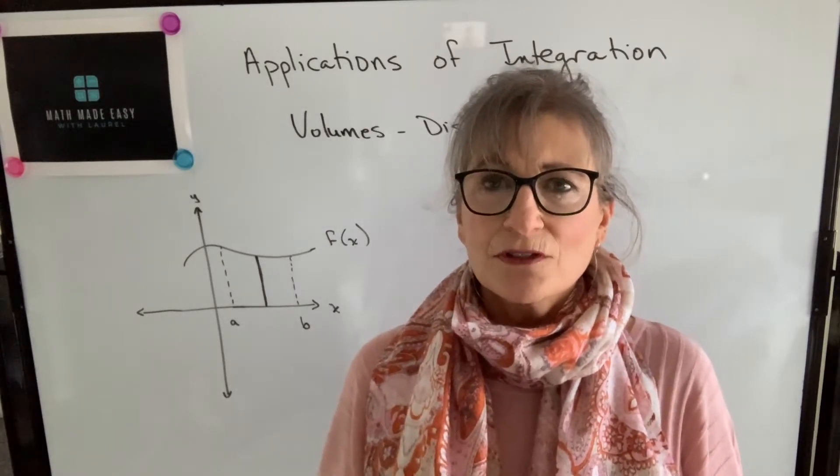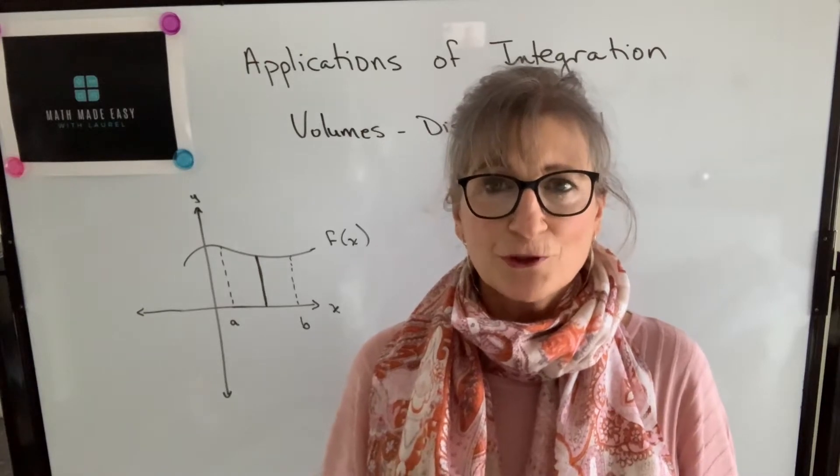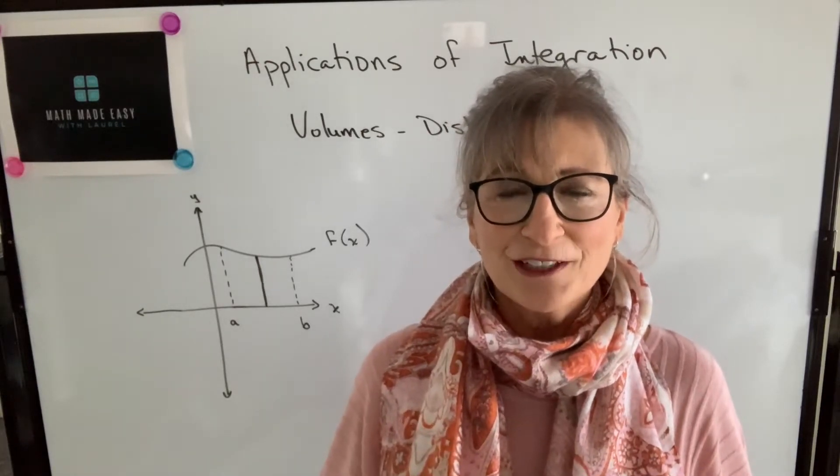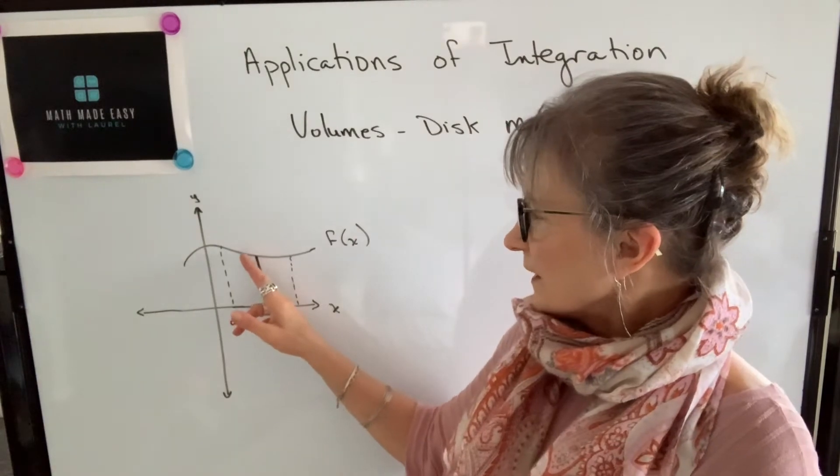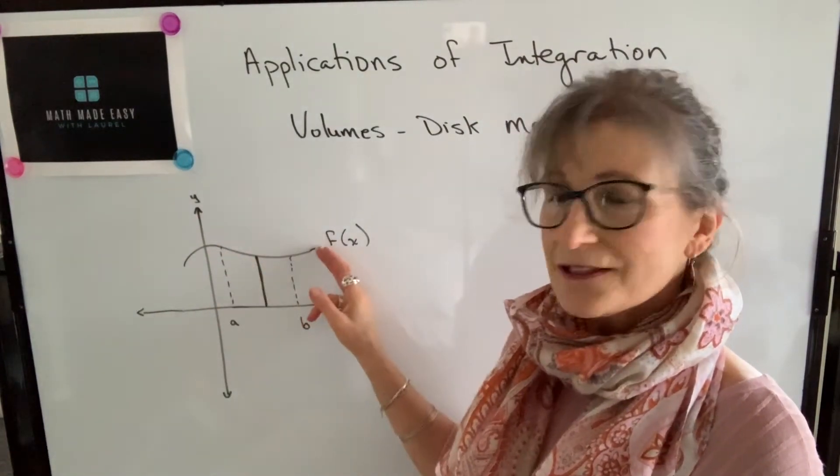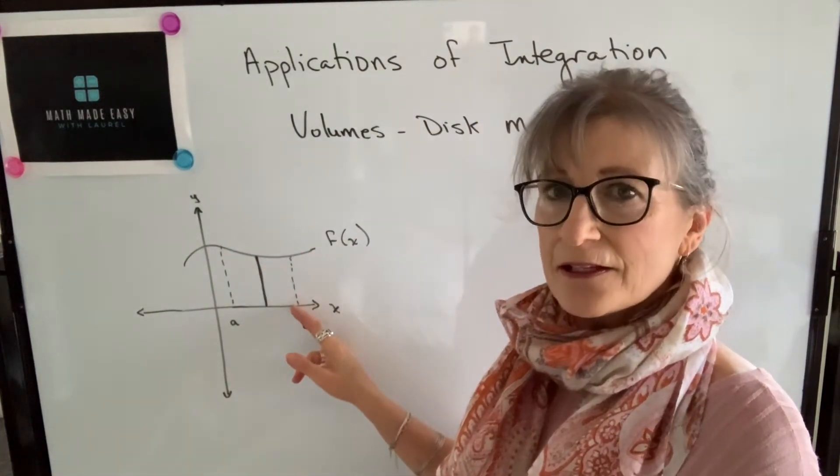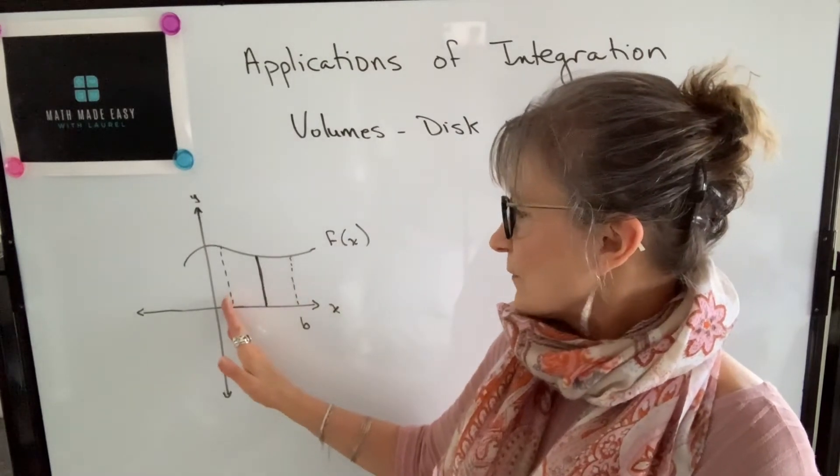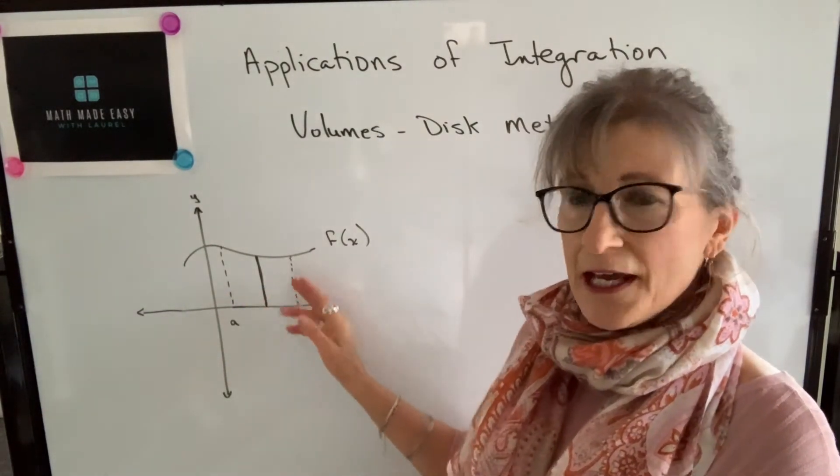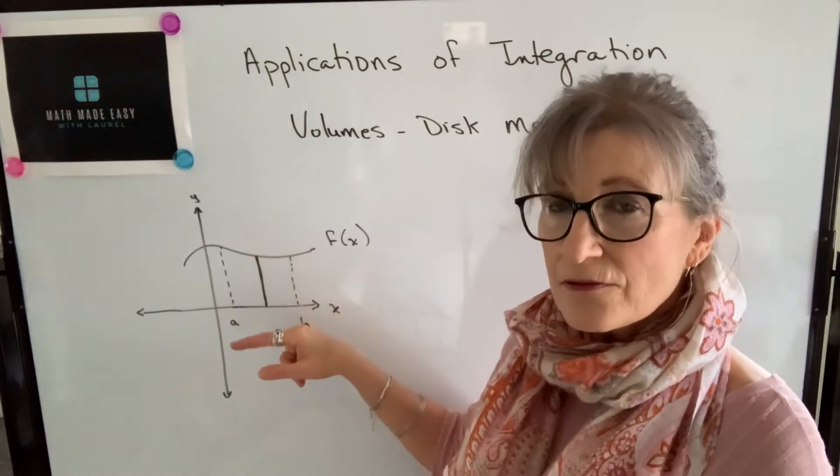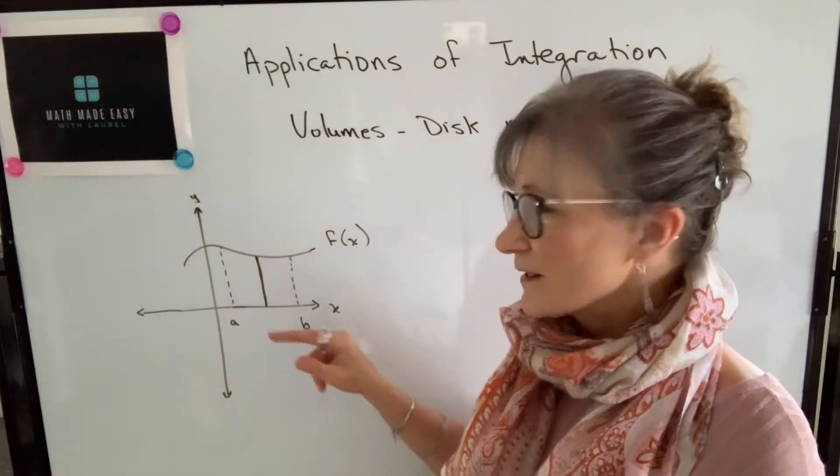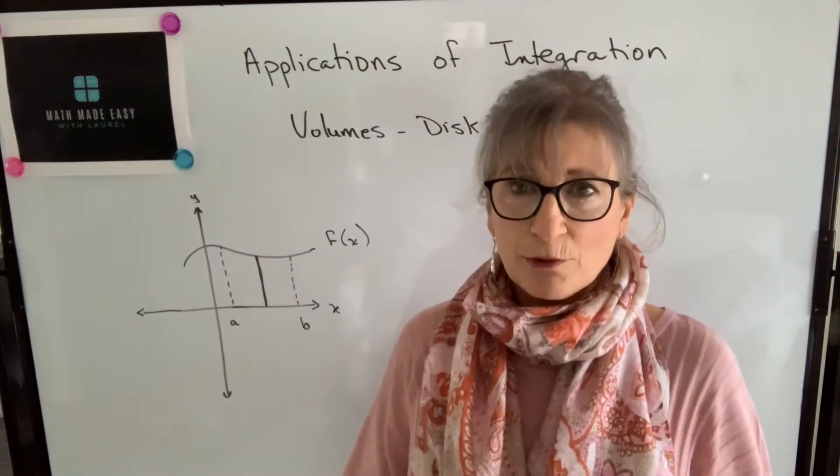And the method that we're going to use to find these volumes is called the disc method, which you'll see why very shortly. If I were to take the area bounded by f of x and the x-axis from x equals a to x equals b, and if I were to rotate that area around the x-axis, it would create a volume.